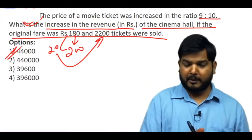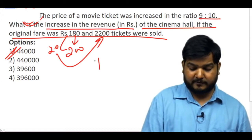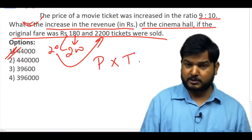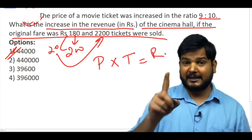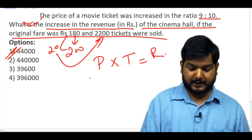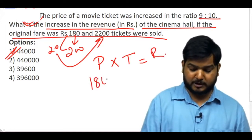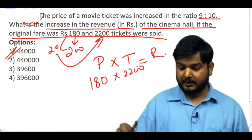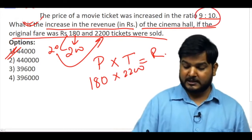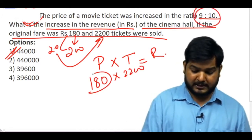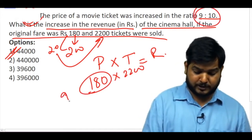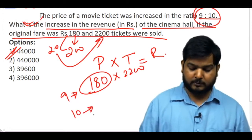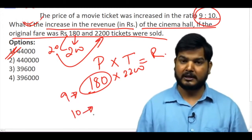The price of a ticket is increased — and the number of tickets sold gives you the revenue. If the original fare corresponds to 9 in the ratio, then the new fare will correspond to 10.